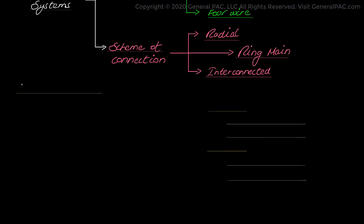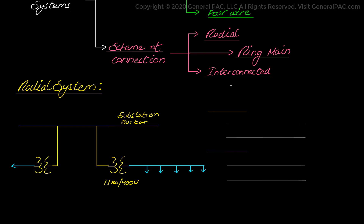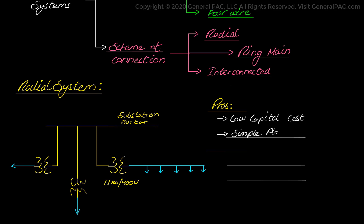Continuing on to distribution systems. First, we have radial systems. In this type of system, separate feeders radiate from the substation and feed the distributor, branching into sub-feeders and laterals which extend to all parts of the area being served. A radial system is used when the load is operating on low voltage and the substation is located at the center of the area covered by the load. It has a low initial capital cost, requires simple planning, and is the simplest among all.